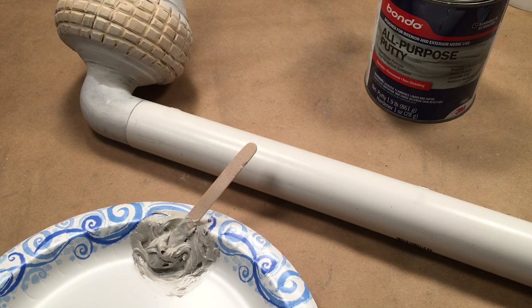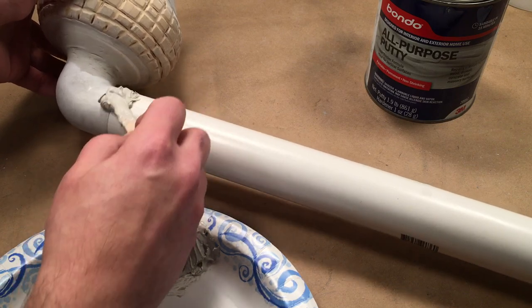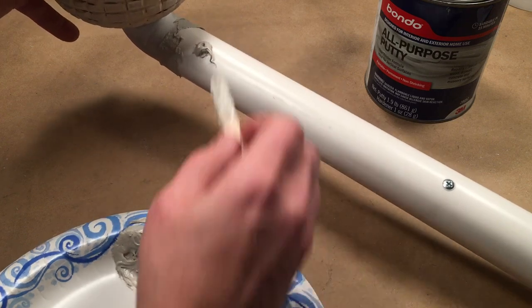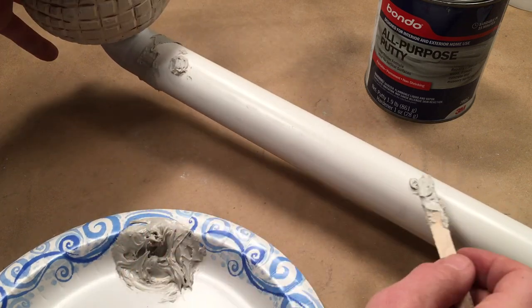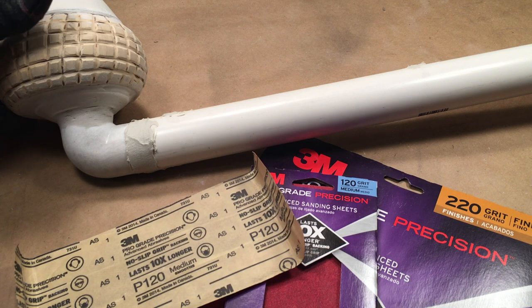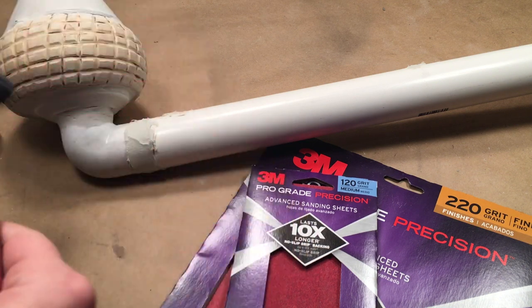Mix up some more Bondo and cover the joint between the PVC elbow and pipe. Sand down the Bondo with 120 grit and then 220 grit sandpaper.